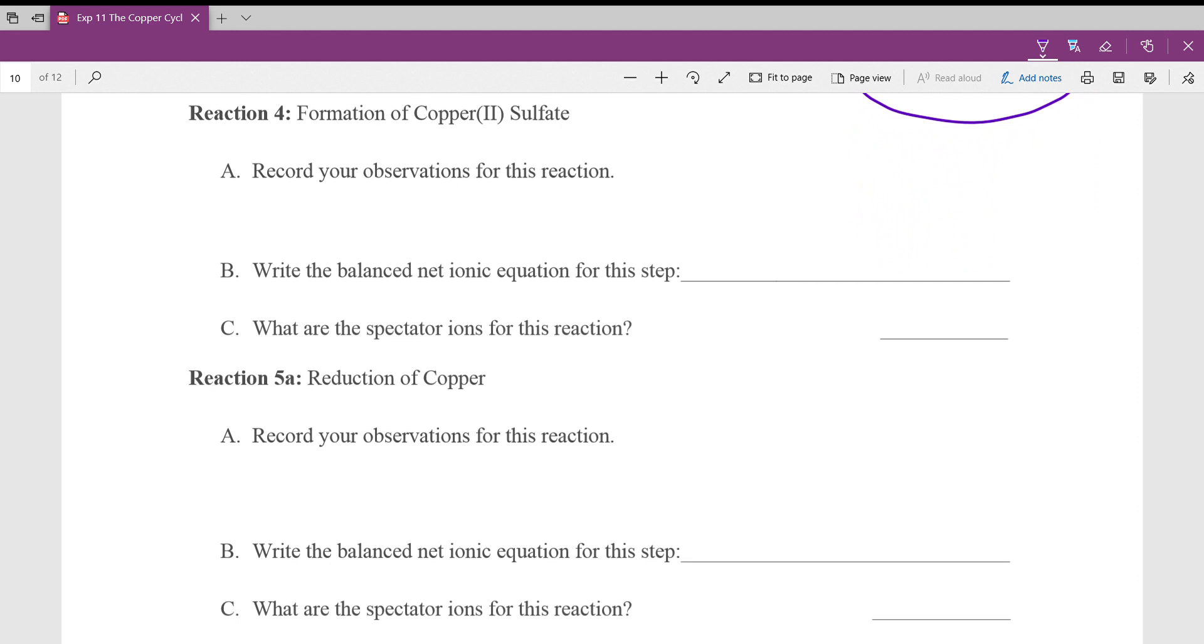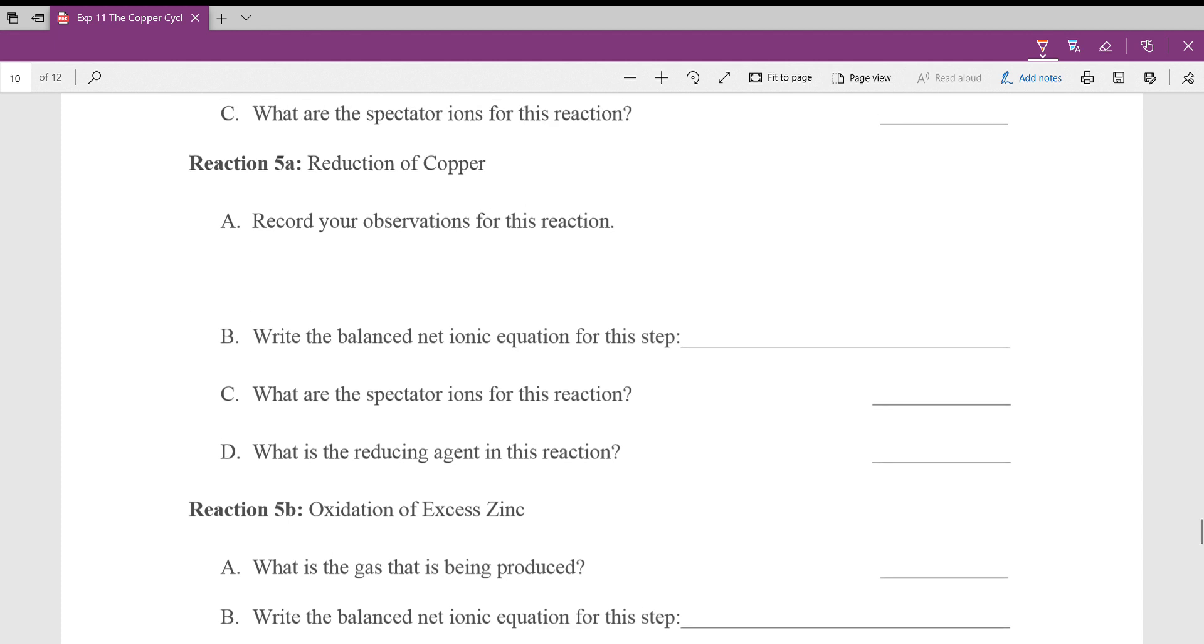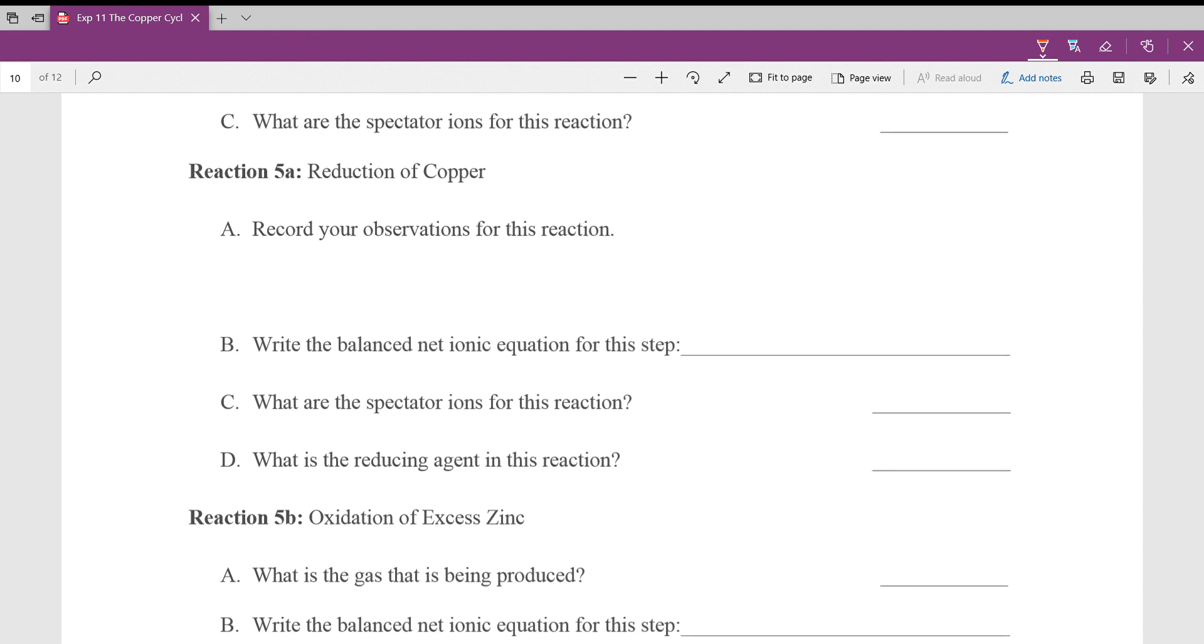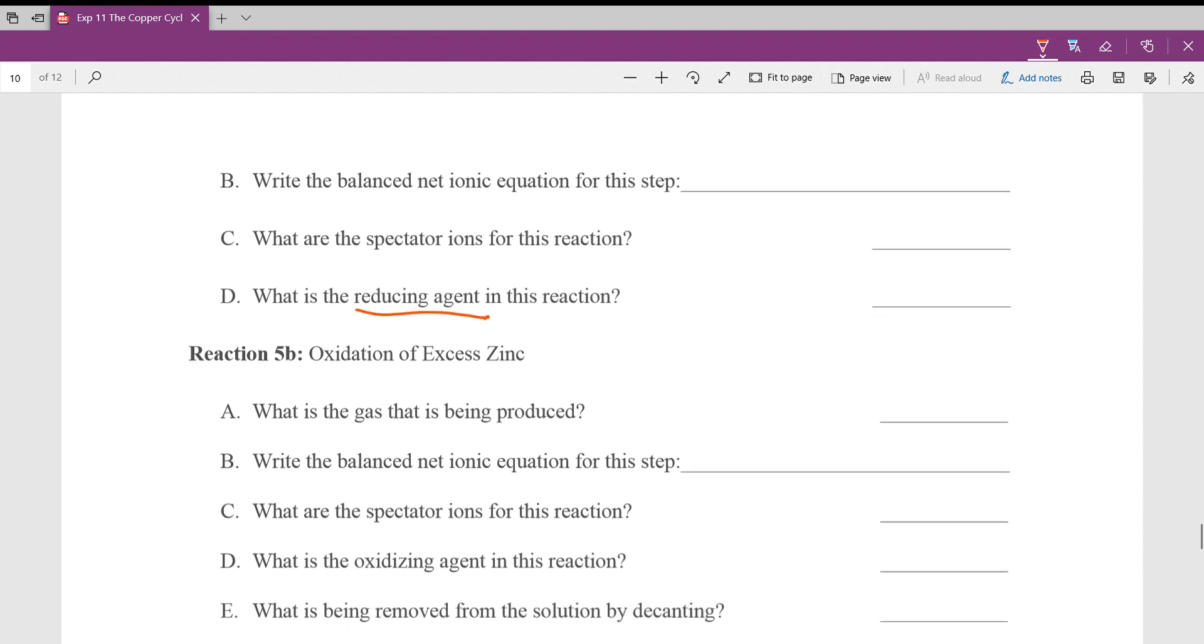Observations, again, straightforward. Balanced equation. Spectator ions, straightforward. Reduction of copper. In step five, there are two reactions going on at once. One of those reactions is the reduction of copper. So, the zinc is dissolving. The copper is coming out of solution. Balanced net ionic equation. Again, pretty simple. Spectator ions. Again, pretty simple. And the reducing agent. What did we add? We added a metal. And it's swapping places with copper. The metal that we added, that's the reducing agent.